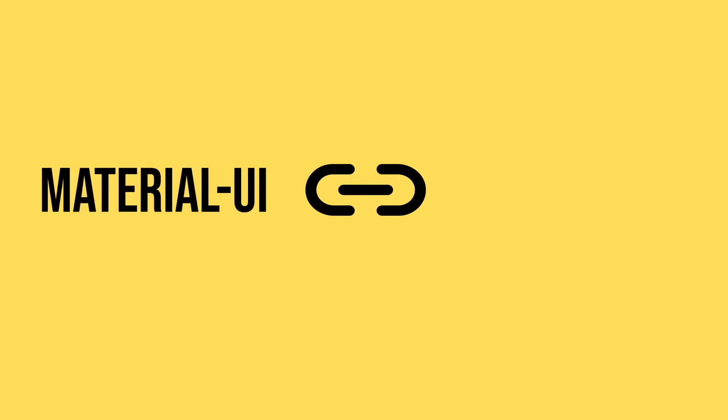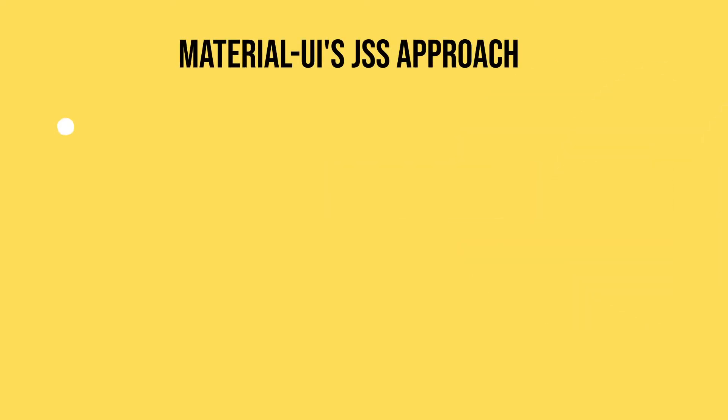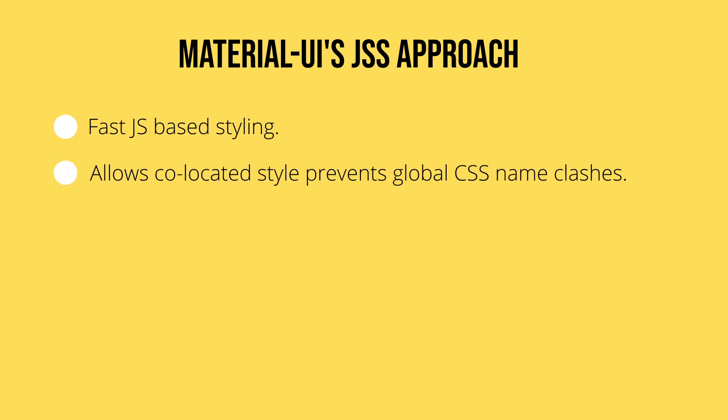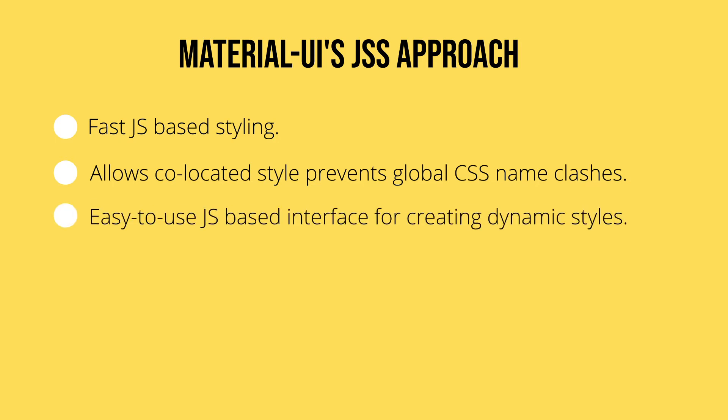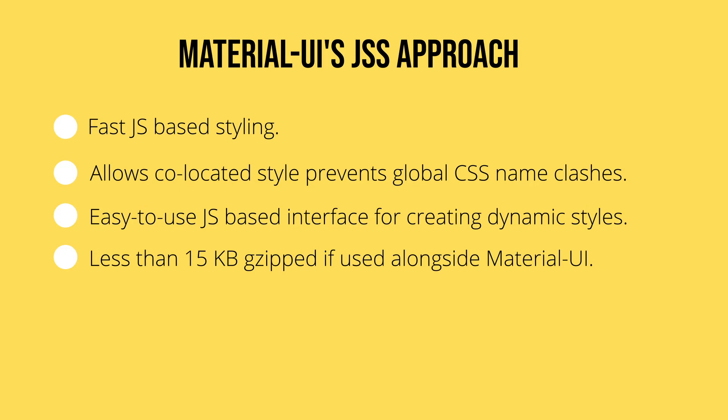Material UI uses JSS for styling — it's a JavaScript-based way to add CSS to components. Advantages of using Material UI styling: First, it is fast for JS-based styling. Second, it allows co-located styles which prevents the problem of global CSS name clashes. Third, it provides an easy-to-use JS-based interface for creating dynamic styles. And fourth, it is actually less than 15 kilobytes gzipped and bundle size does not increase if you use it alongside Material UI.